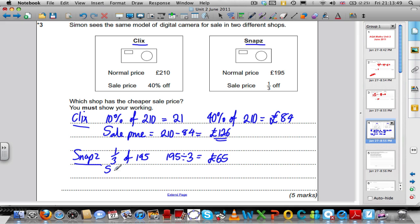So the sale price is equal to 195, take away 65, which is equal to £130. Remember the question asked you which shop has the cheapest sale price, so you must state that. Therefore, Clicks is cheaper by £4.